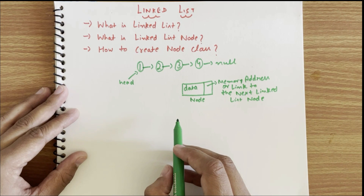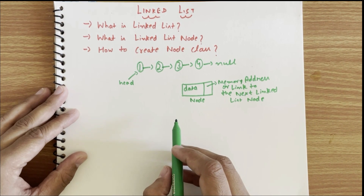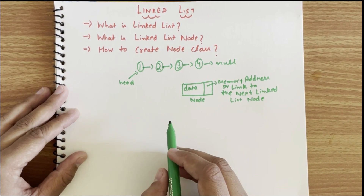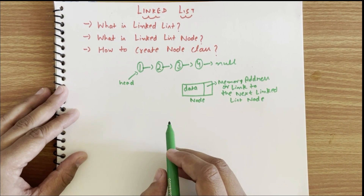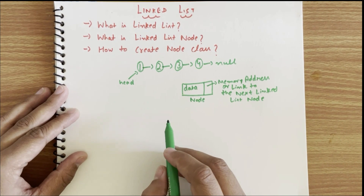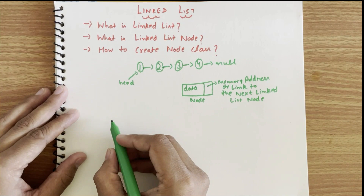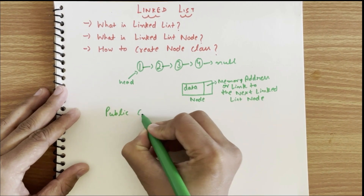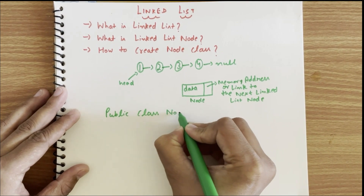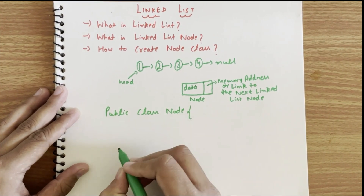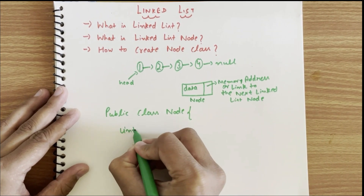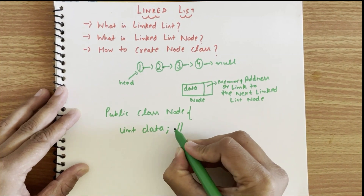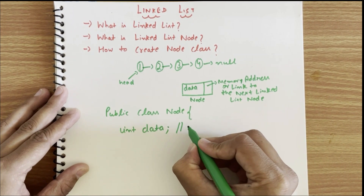Now let us see how to define your own node class so that you can store a specific type of data within your linked list. Let's assume our node is holding integer type of data. We declare a class: public class Node. Within the node, since we are storing integer type data, I will first define a variable: int data.